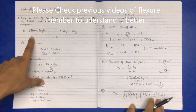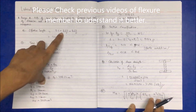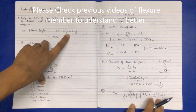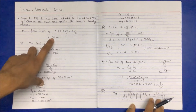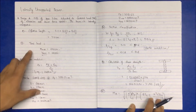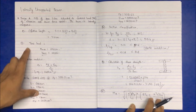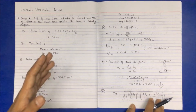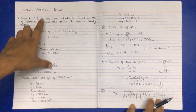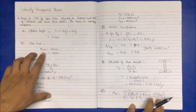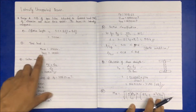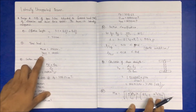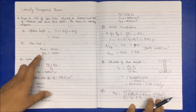The very first step is to calculate the effective length, which includes half the thickness of the wall, giving 3.73 meters. The second step is to find the total load acting on the member, but in our case the question has directly given us M_max and V_max, so we don't have to calculate the total load.